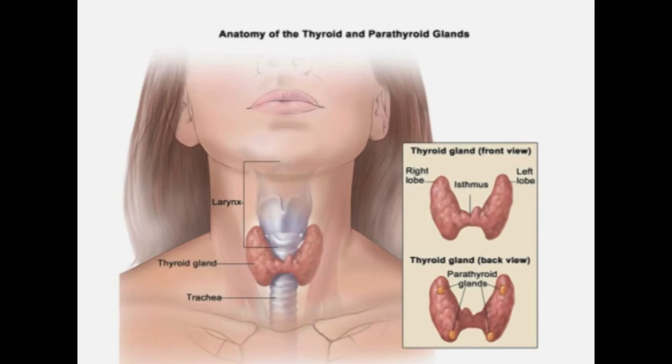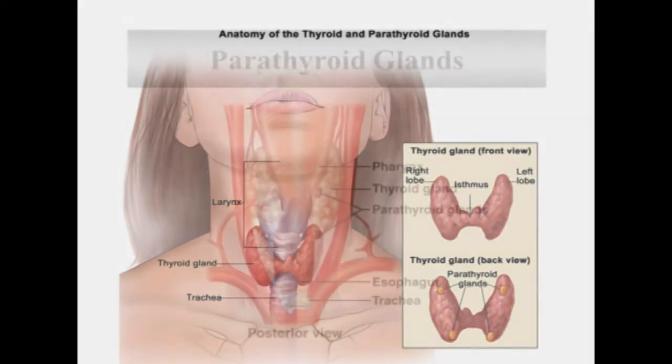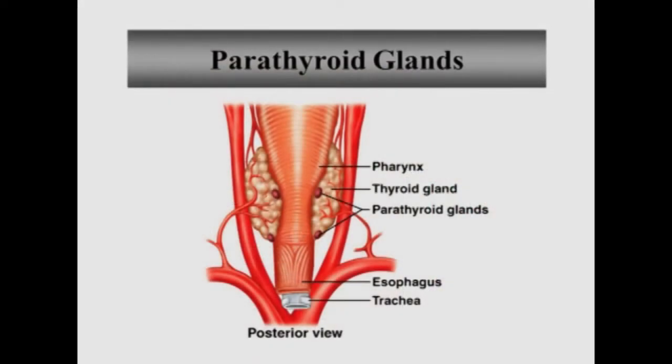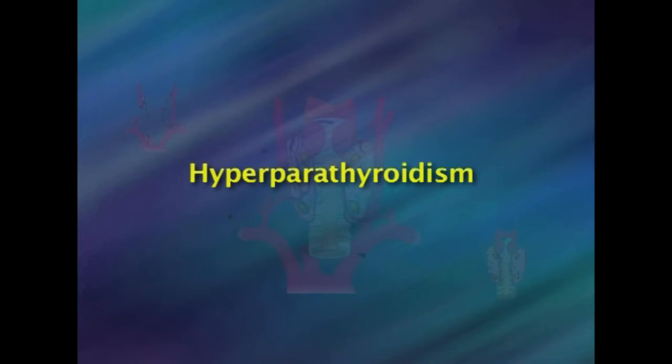The sole purpose of the parathyroid gland is to regulate the calcium level in the blood within a narrow range so that the nervous and muscular system can function properly. Although they are neighbors and both part of the endocrine system, the thyroid and parathyroid glands are otherwise unrelated. The single major disease of the parathyroid gland is the over-activity of one or more of the parathyroids, that is, hyperparathyroidism.